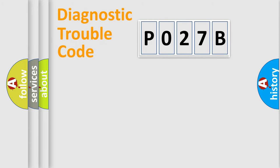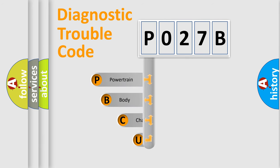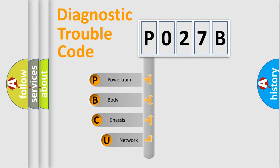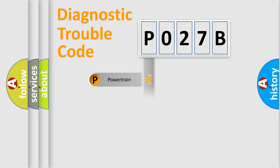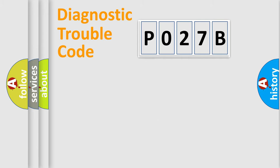Let's do this. First, let's look at the history of diagnostic fault code composition according to the OBD2 protocol, which is unified for all automakers since 2000. We divide the electric system of the automobile into four basic units: Powertrain, Body, Chassis, and Network.